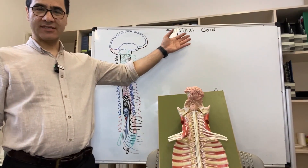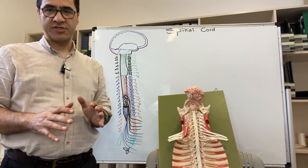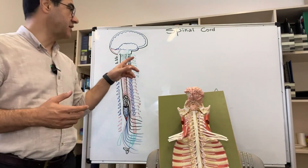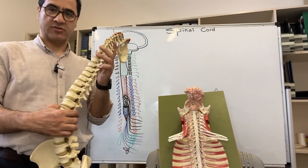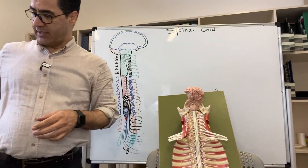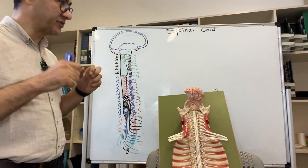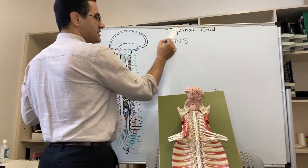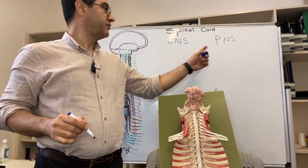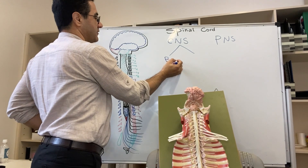Hi guys, I'm going to talk about the spinal cord and give you an overview: where it starts, where it finishes, and how spinal nerves come out of the vertebral column. I'll use this model, this drawing, and this vertebral column to show the details. The nervous system splits into two: the central nervous system (CNS) and the peripheral nervous system (PNS).